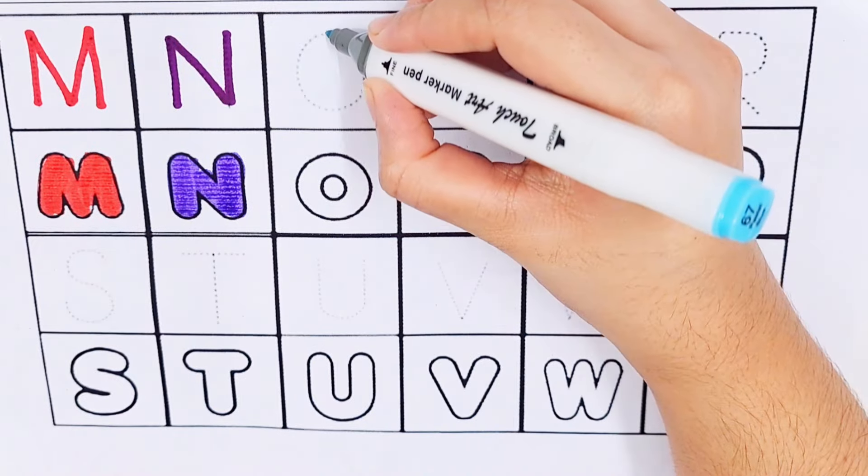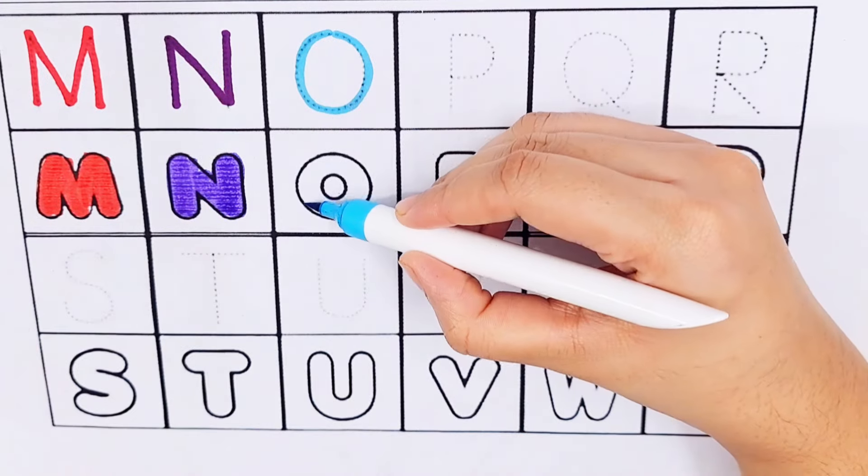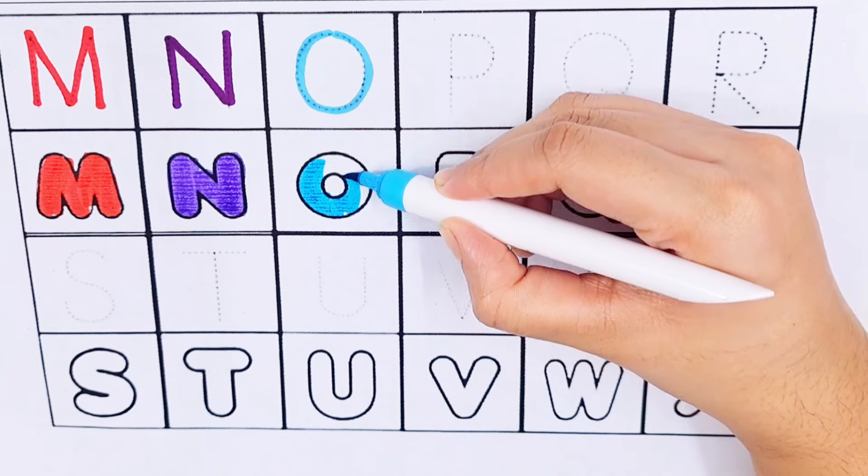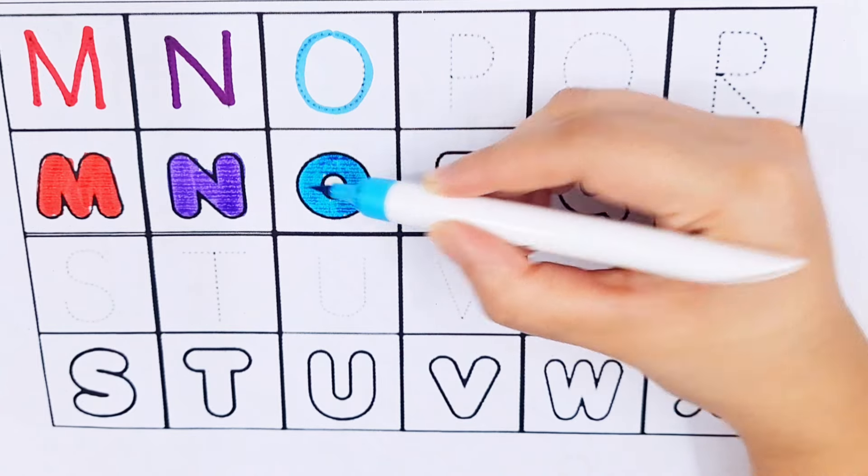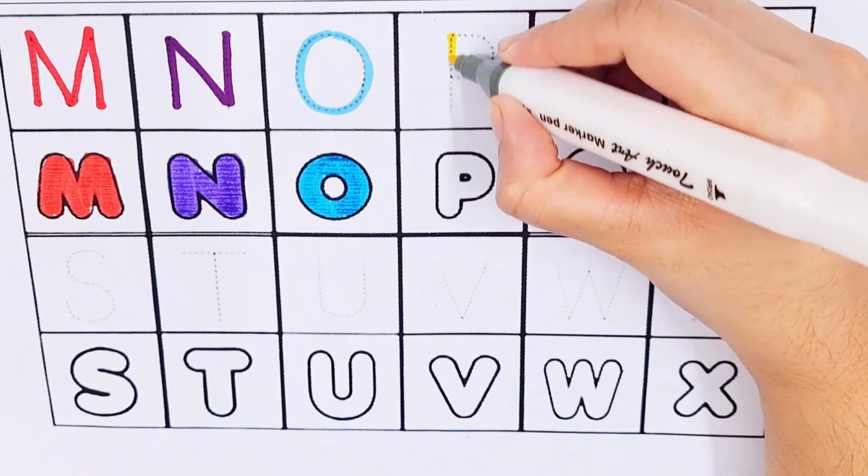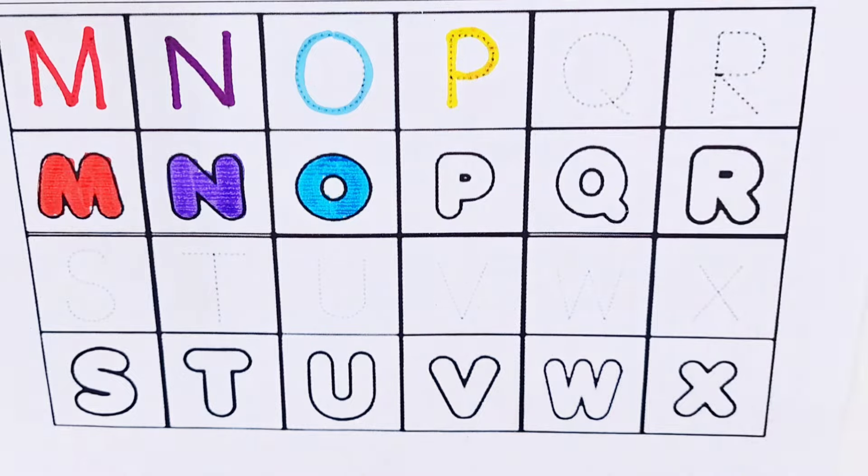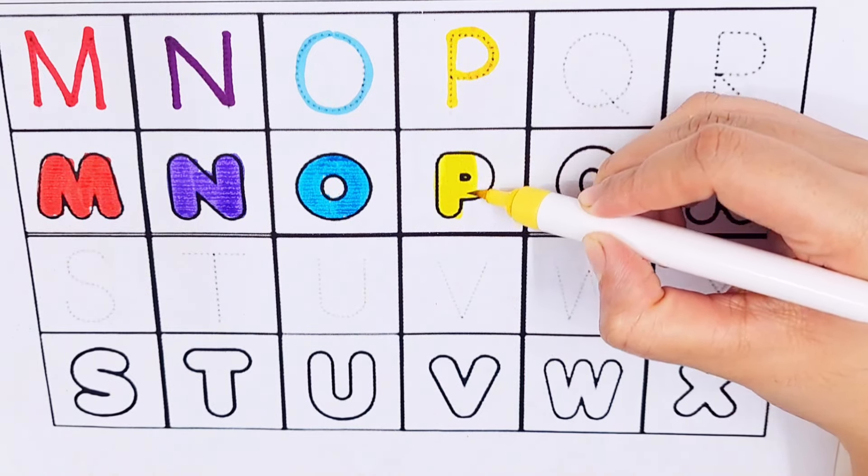O, O for ox, O for oxygen. P, P for parrot, P for pen.